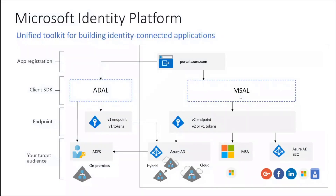What is Microsoft Identity Platform? It is a set of authentication services and open source libraries and application management tools with which application developers can build applications where users can log in with different identities, and then authorize access to secure web APIs, for example Microsoft Graph APIs. All architectures are based on industry standard protocols — OAuth2 and OpenID Connect. Microsoft libraries, especially MSAL, are the best choice when you use Microsoft Identity Platform because using MSAL for token acquisition ensures high level of resiliency and security.